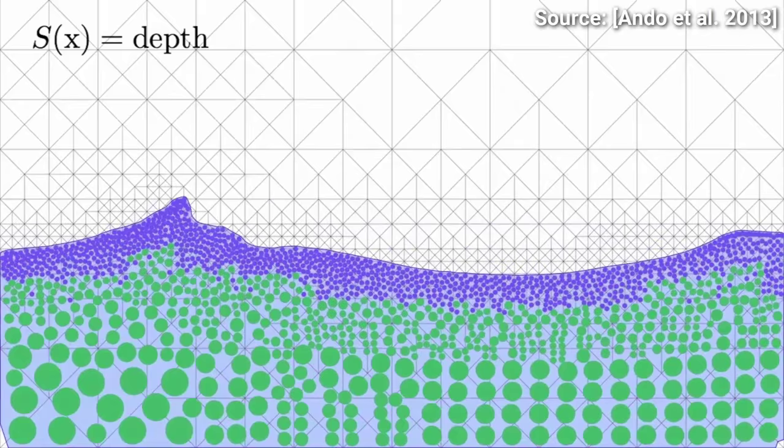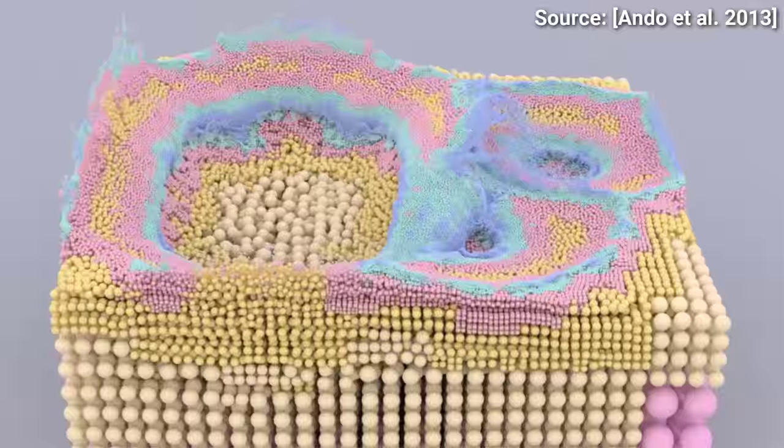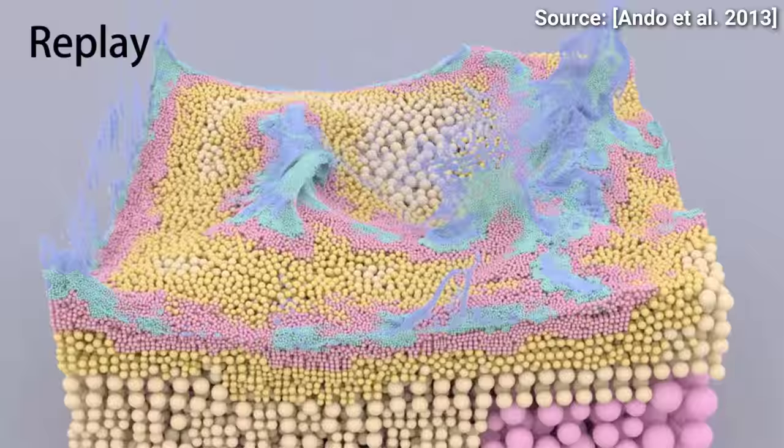One possible way to alleviate this would be to write an adaptive simulation program. Adaptive means that the simulator tries to adapt to the problem at hand. Here it means that it recognizes the regions where it needs to focus a lot of computational resources on, and at the same time it also tries to find regions where it can get away with using less computation.